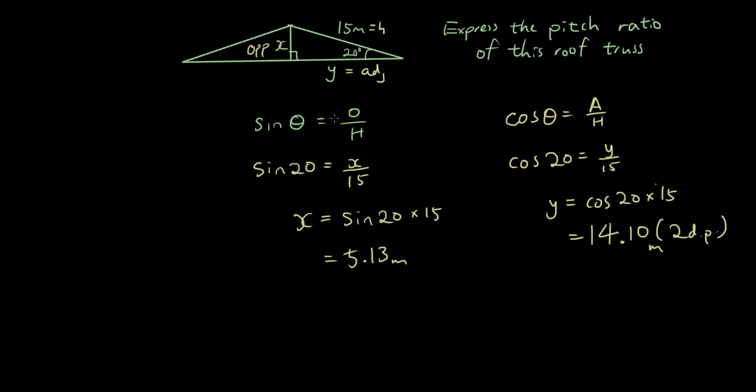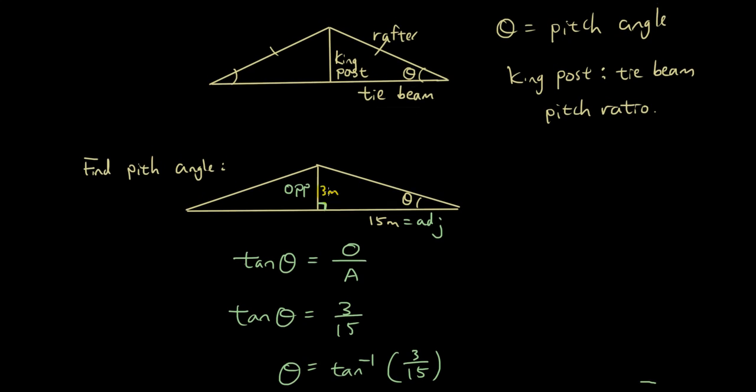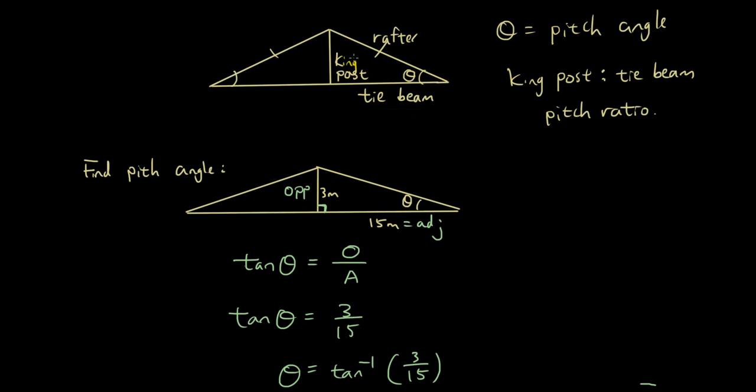We have the opposite and the adjacent, the x and the y. Now if you remember, how do we write the pitch ratio? It's the ratio of the king post to the tie beam.